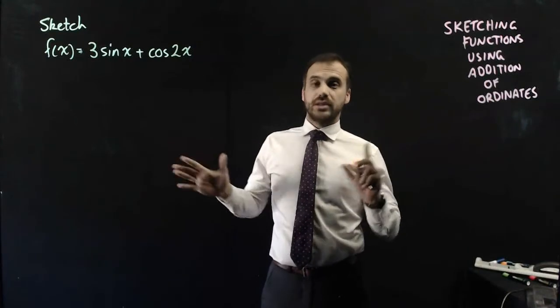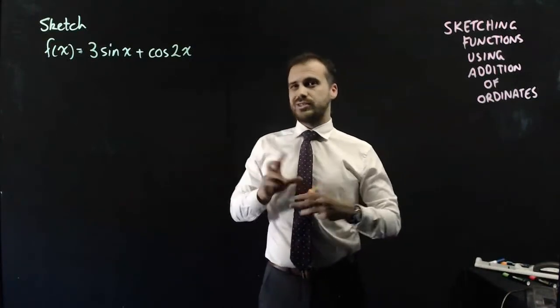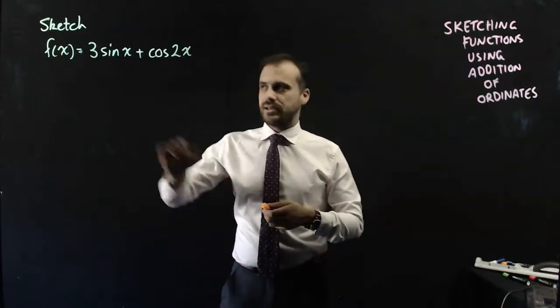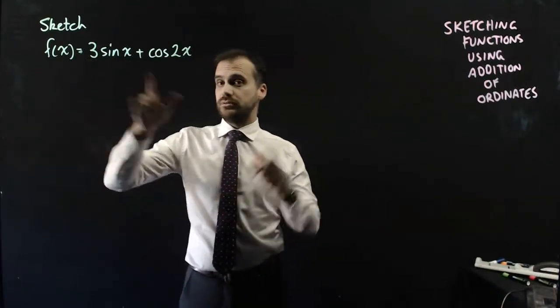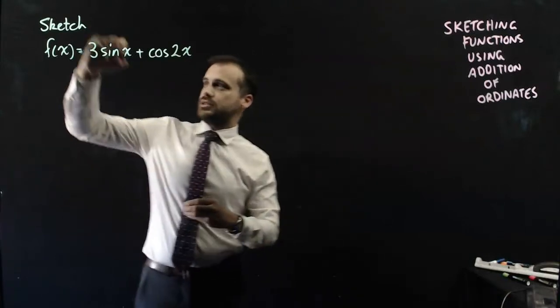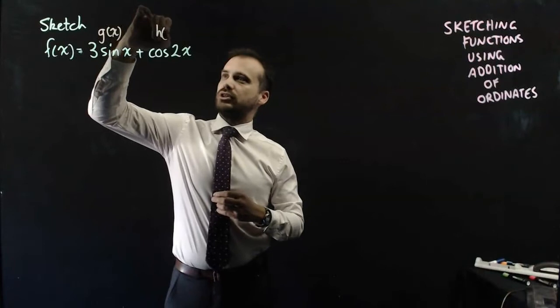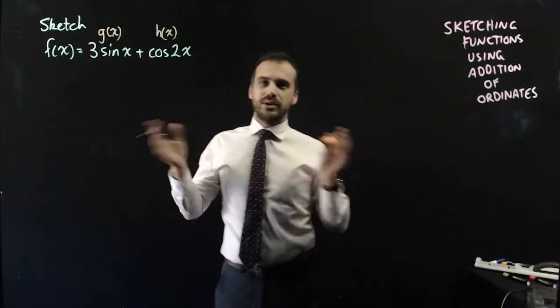Now, I don't know what that's going to look like yet, but I do have a decent idea of how to sketch it. And the key is in understanding that it's made up of a function that you can sketch, and another function that you can sketch. So I'll call this function g(x), and I'll call that function h(x), and I'm going to sketch them.